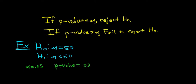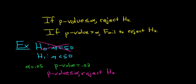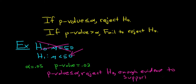So in this case, the p-value is less than or equal to alpha, right? Our p-value is 0.02, and our alpha is 0.05. So our p-value is less than or equal to alpha. So in this case, we would reject the null hypothesis — we would reject H₀. And that means there is enough evidence to support H₁.